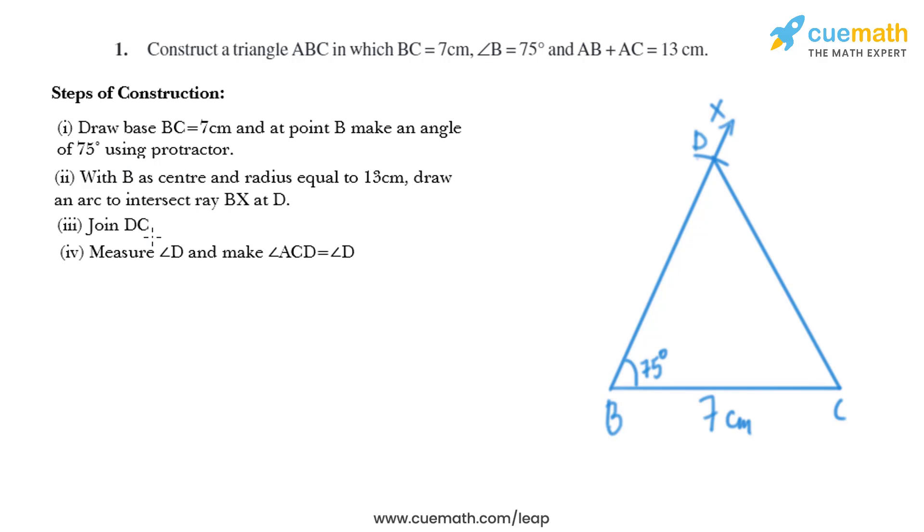Now in the next step, measure angle D and make angle ACD equal to angle D. So I'll measure angle D using a protractor and will make angle ACD same as angle D. So this is angle D and will mark this point as A.